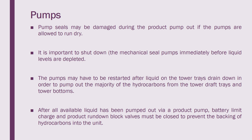The pumps may have to be restarted for liquid or tower tray drain-down in order to pump out the majority of hydrocarbon from the tower draw tray and the tower bottom. For example, in a distillation column, we cannot allow the mechanical seal pump to run until the bottom of the column is completely empty - we keep some amount of liquid on the safe side to safeguard the suction. At the same time, we must ensure all the tray liquid reaches the bottom of the column. If it is not reaching, we have accumulation inside the column and it is not 100% cleared. We must allow the tray liquid to reach the column bottom, then restart the pump.